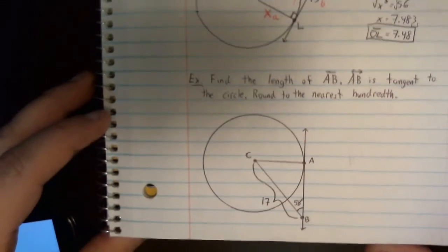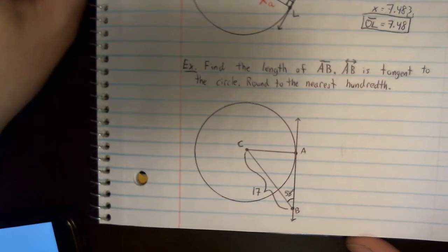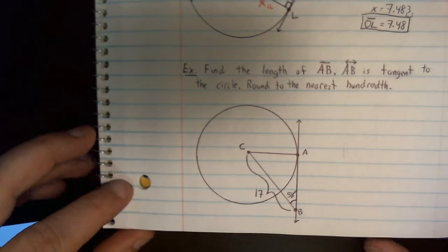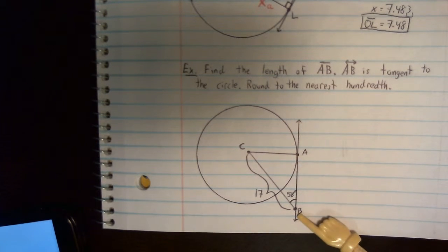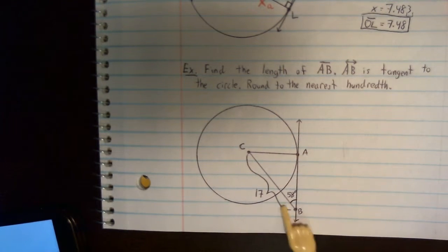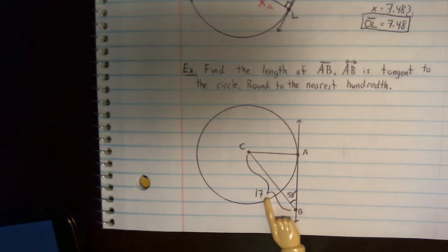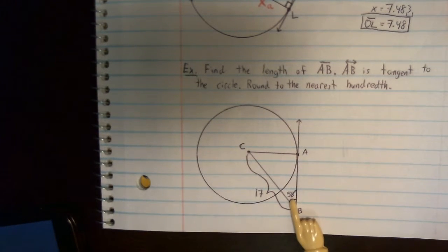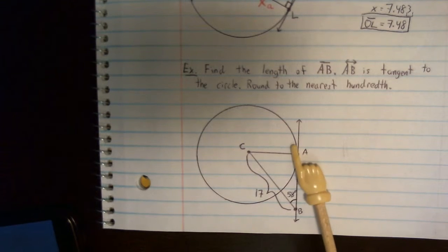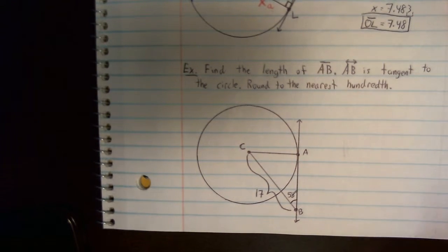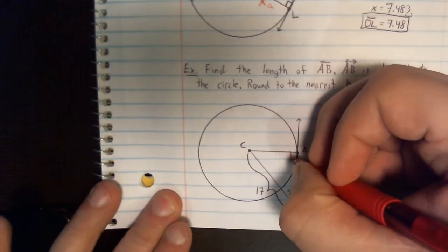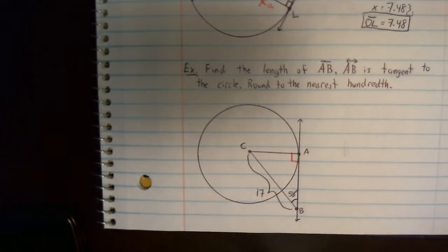Last problem that we're going to look at. Last type of problem. This problem tells us again that we have a tangent AB and that they're asking us to find the length of AB. But now you notice that the picture that they give us, they only give us one side length here, and they give us an angle measure. Well, remember what I had told you. We have a tangent. So we know that this is going to be worth 90 here. And if Pythagorean theorem doesn't work, we can always use trig.